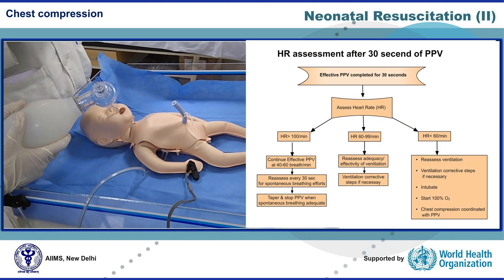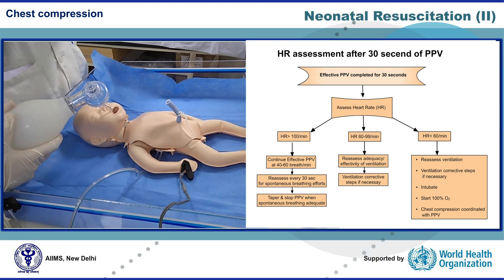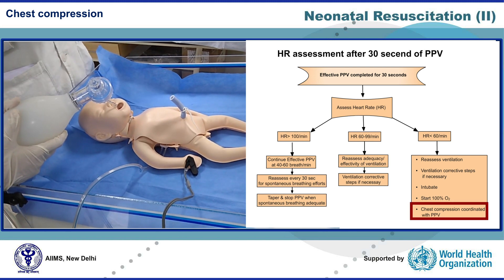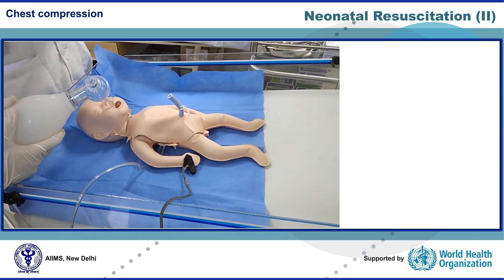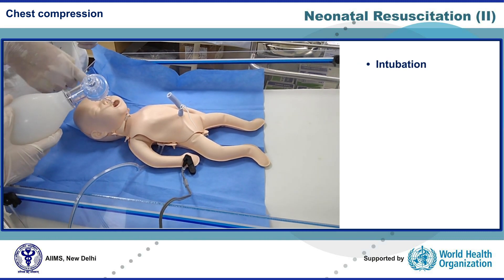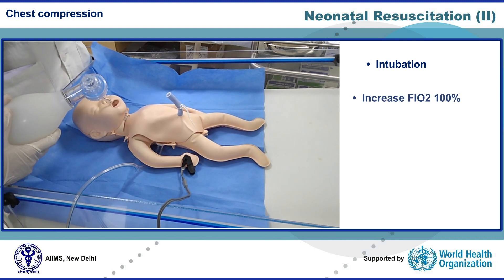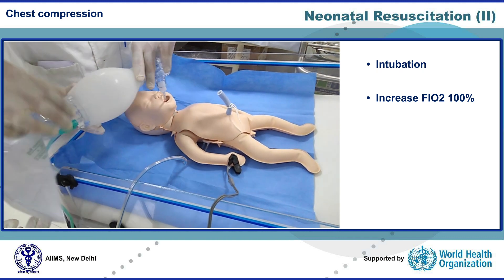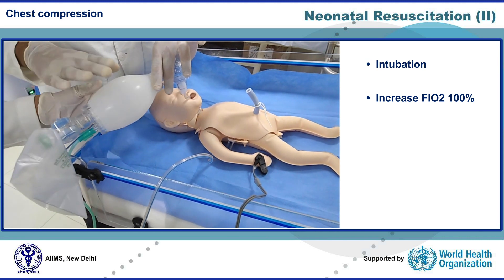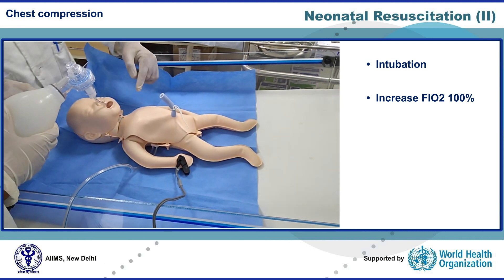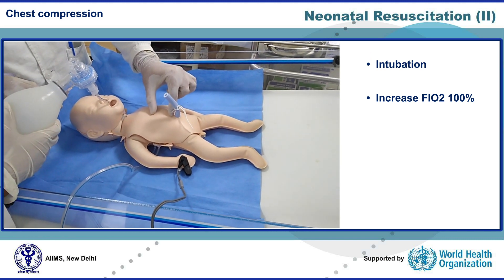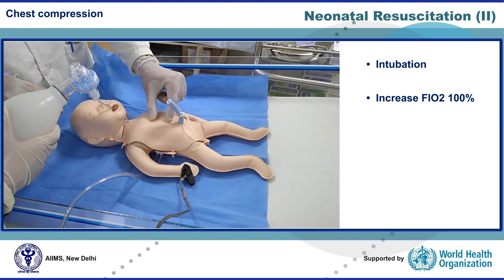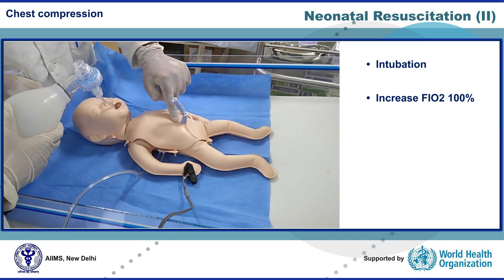After 30 seconds of effective positive pressure ventilation that moves the chest, if the heart rate is less than 60 per minute, we need to add chest compression to PPV. Before starting chest compression, we must ensure the baby is intubated and FiO2 is increased to 100% using a bag with oxygen and a reservoir attached. The location of chest compression should be the lower half of the sternum — draw an imaginary inter-nipple line and compress below that in the midline, taking care not to press on the xiphisternum.